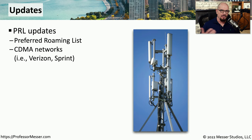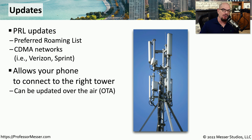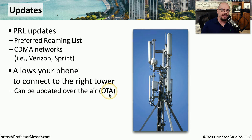Many of the updates for our mobile devices occur in the operating system of the device itself. One of these updates is a PRL update — a preferred roaming list — that allows your phone to understand where all of the appropriate towers are for the network it happens to be using. This can be updated over the air, so you may see that your phone is performing an OTA update, which may be because a preferred roaming list needs to be changed on your device.